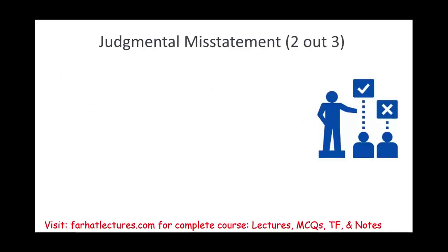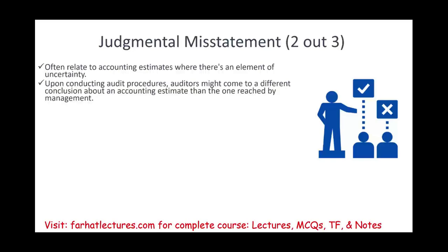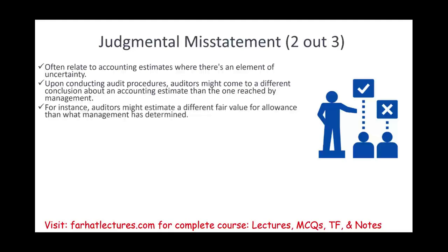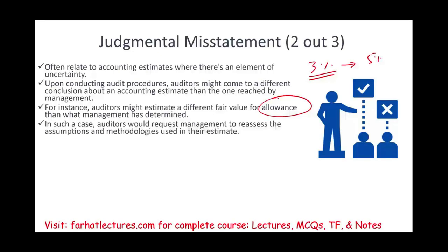Then we have judgmental misstatements. From the word judgmental, we are making an estimate, we have some sort of uncertainty. Upon conducting the audit, the auditor might come to a different conclusion about an estimate than the one the company made. An example could be the allowance for doubtful accounts. Management gives us that number, and then we take a look at it and say, based on the circumstances, is this allowance appropriate? Let's assume they are estimating 3% of AR as an allowance, but we think it should be 5% because their customer base is deteriorating. Then we have to tell management to reassess their assumption and the method they used in coming up with 3%.